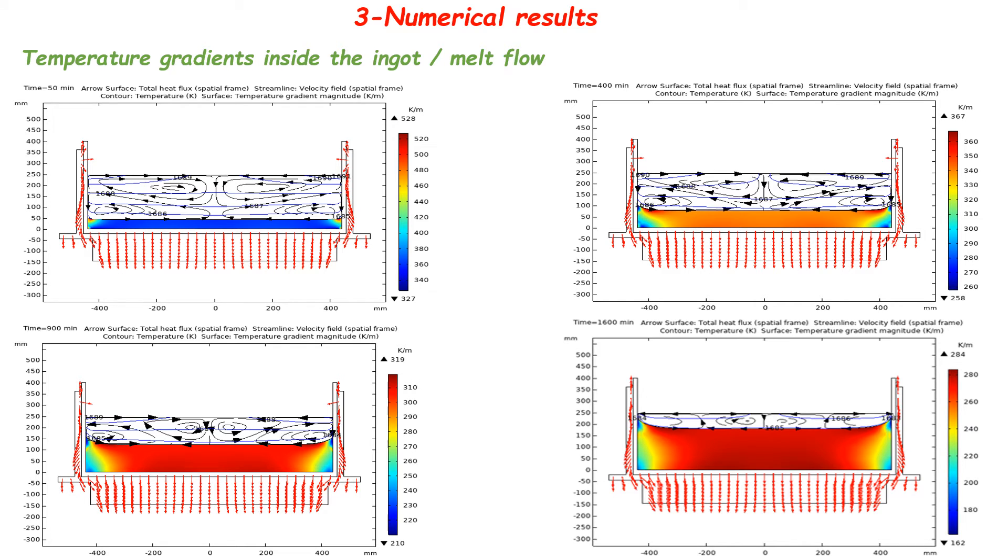These figures show the total thermal gradient magnitude inside the crystal, the surface of total heat fluxes incoming and outgoing from the silicon subdomains, and the streamline convection inside the melt. We can see that the concavity of the solidification front is increasing during time since the total thermal gradient magnitude is decreasing.